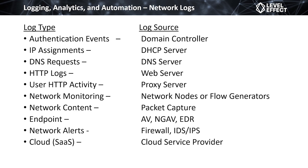We can also get user HTTP activity from a proxy server. It's common practice to deploy a proxy server inside the network so that all web traffic is routed through it before reaching the boundary router and internet. The proxy can do TLS decryption and record all HTTP requests. If you didn't realize this was occurring, be aware that your web activity at work is probably being monitored. Using a proxy, we can collect user activity - which is beneficial if malware is using HTTP or HTTPS, or if users are insider threats accidentally or intentionally exfiltrating data.